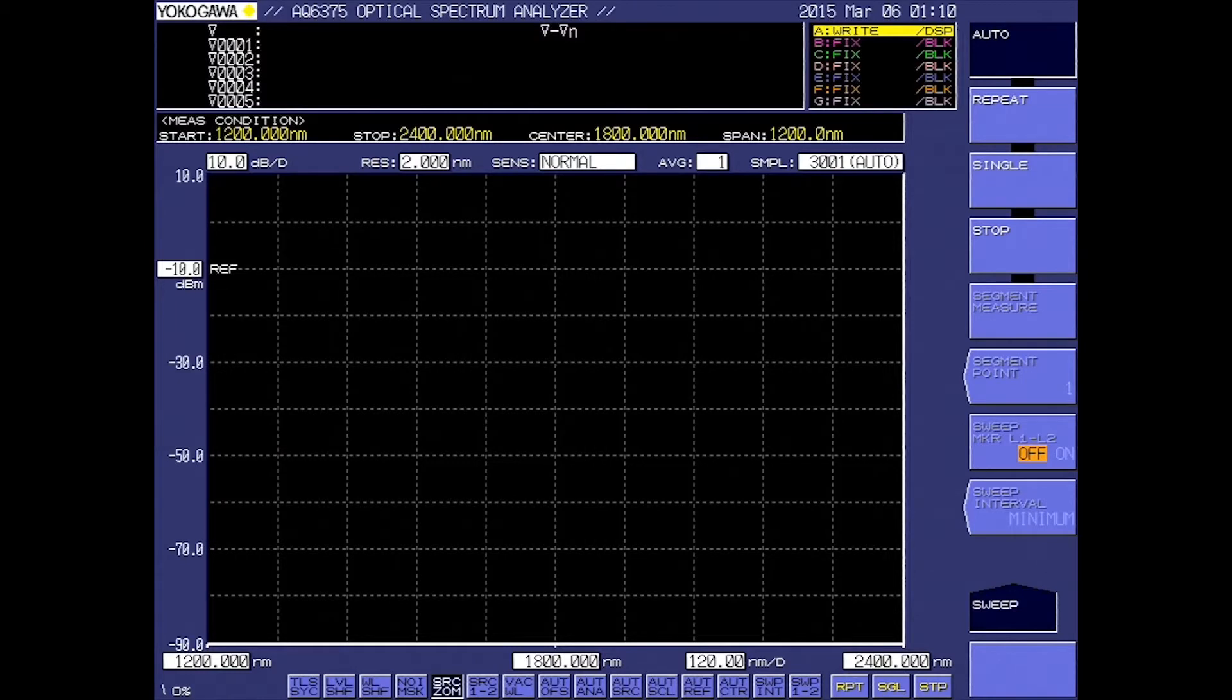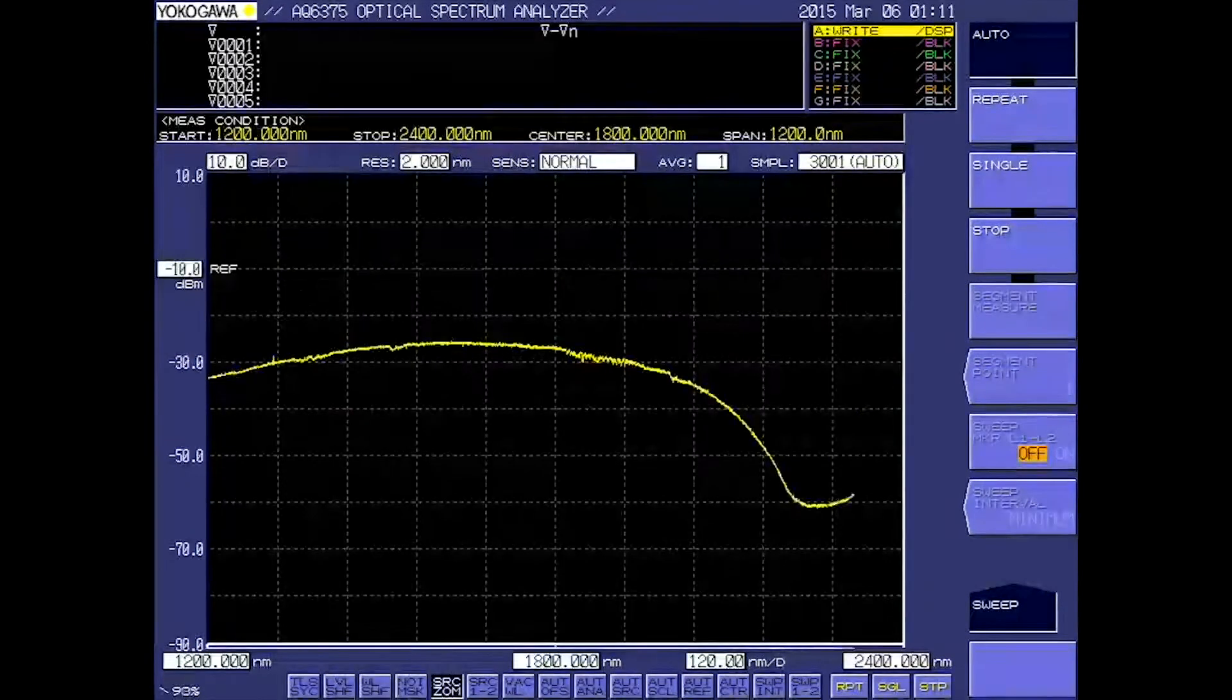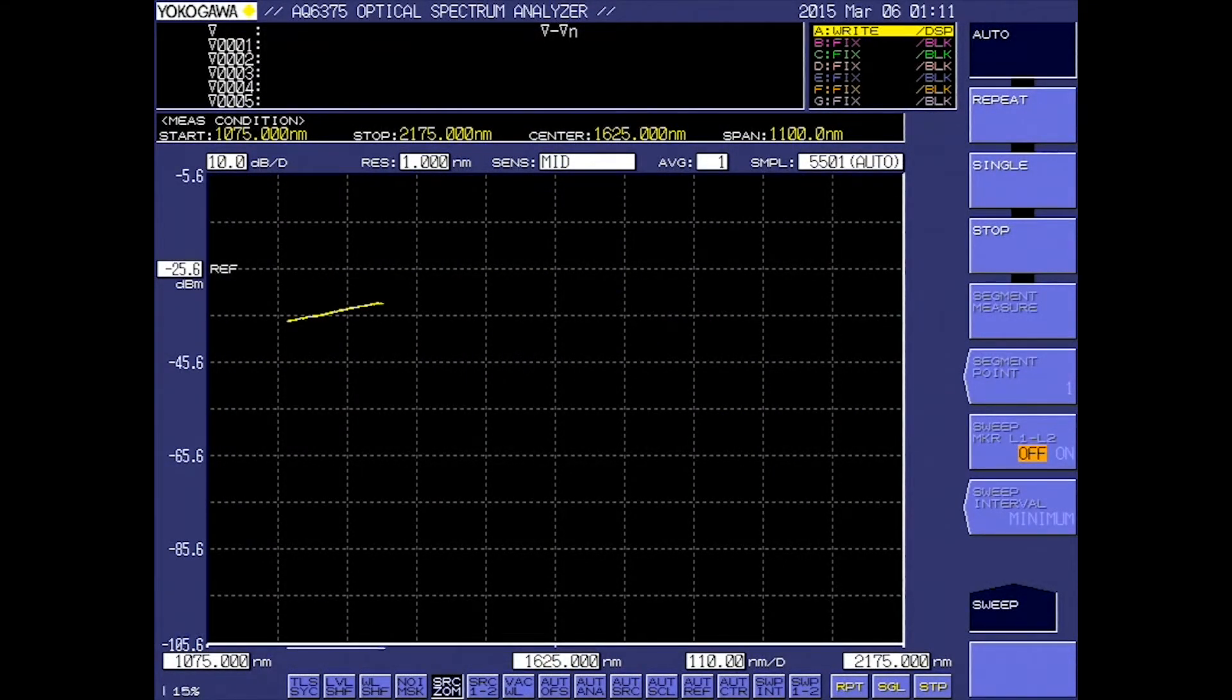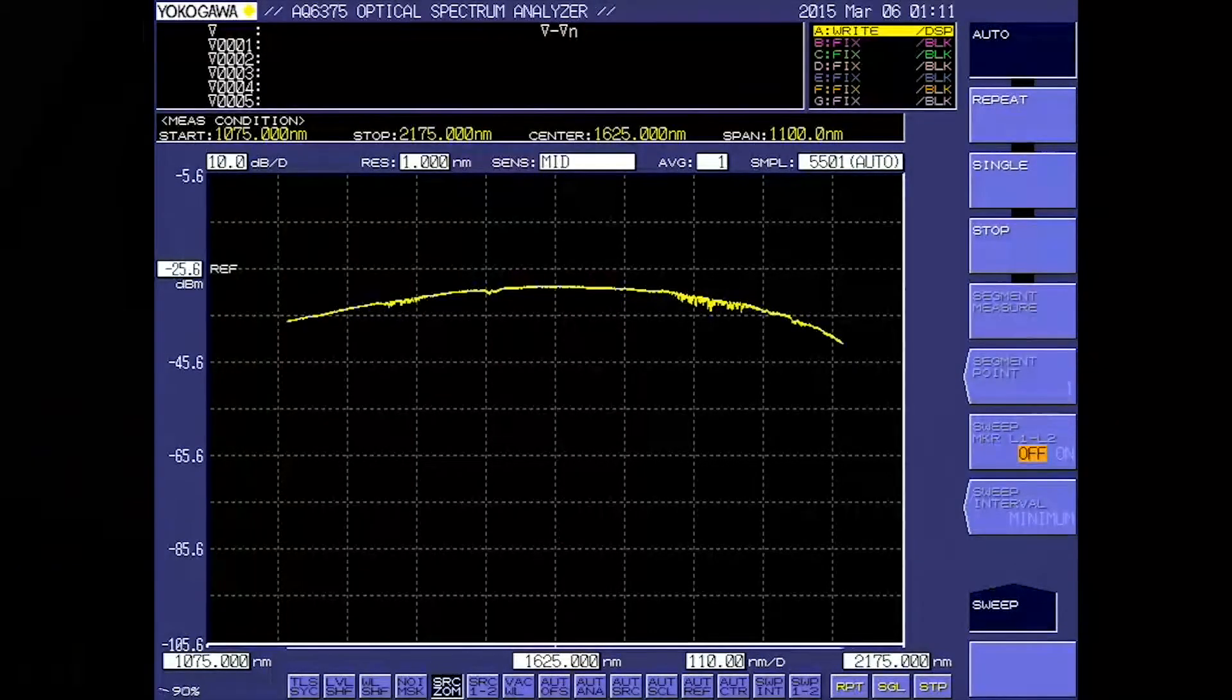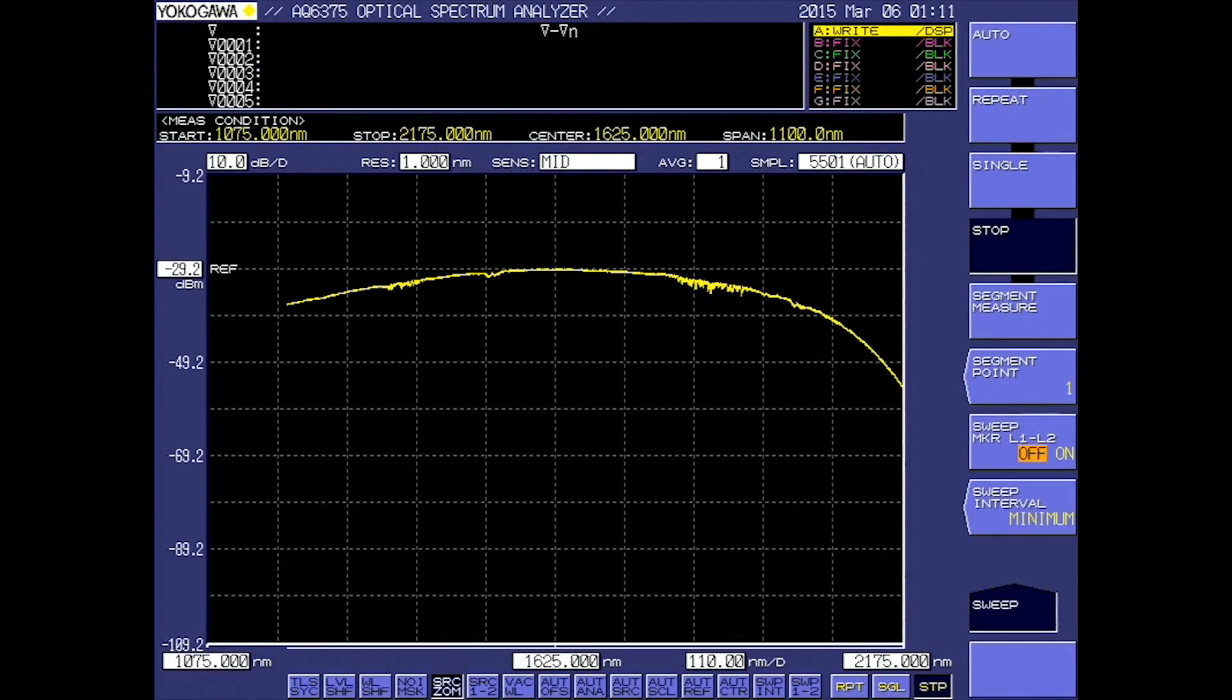Next, let's set up the OSA. This is a very important step when looking for absorption points. On this OSA, you can perform an auto sweep which automatically sets the OSA to the appropriate speed and level based on the input signal. You can then fine-tune the settings to your desired application.